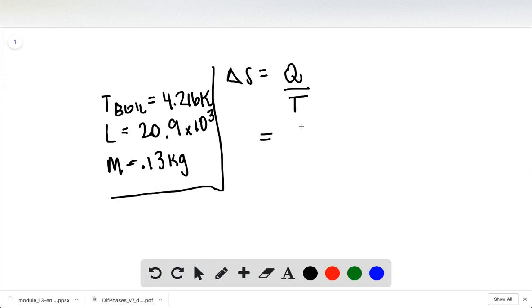What's the heat associated with the phase transition? That's going to be minus M times L, and it's negative because it's losing heat to condense something.